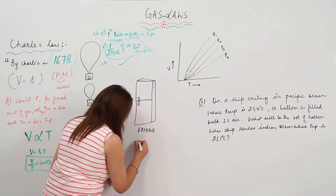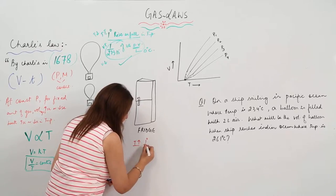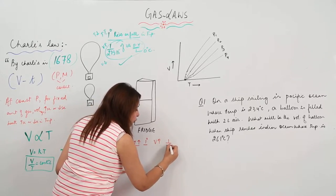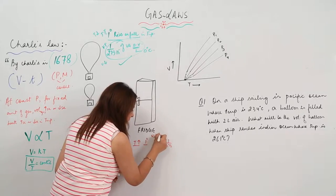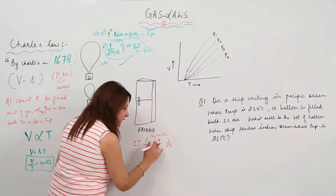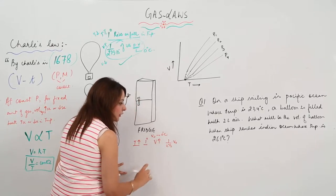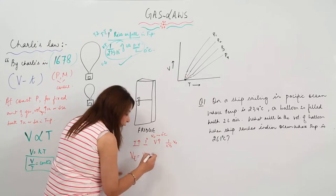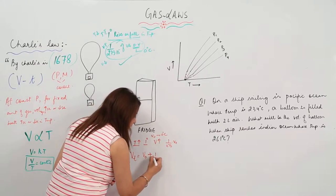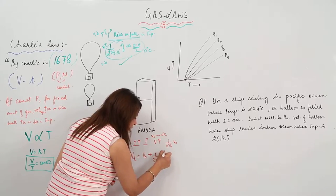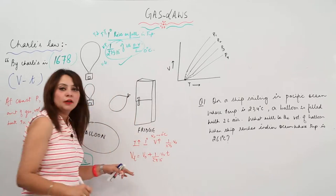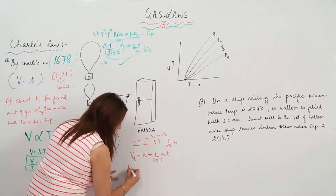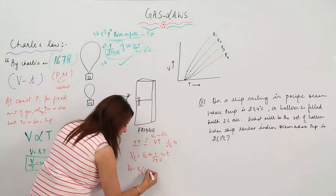Suppose I am increasing the temperature by 1 degree. We know that volume also increases by 1/273.15 of its original volume. Let's say the original volume is V₀ at 0°C. When increasing temperature, the new volume equals the original volume plus the increase, which is 1/273.15 of its original volume for every 1 degree rise, multiplied by T.